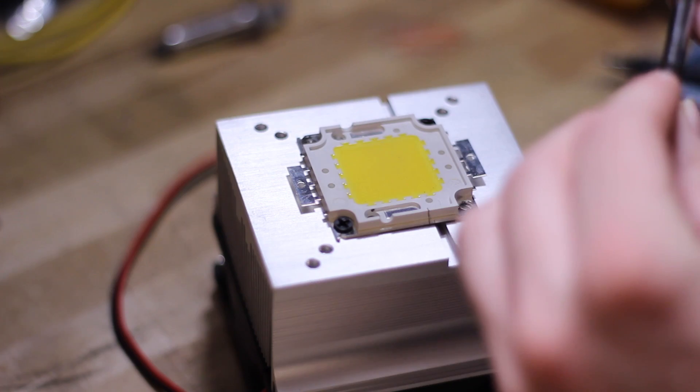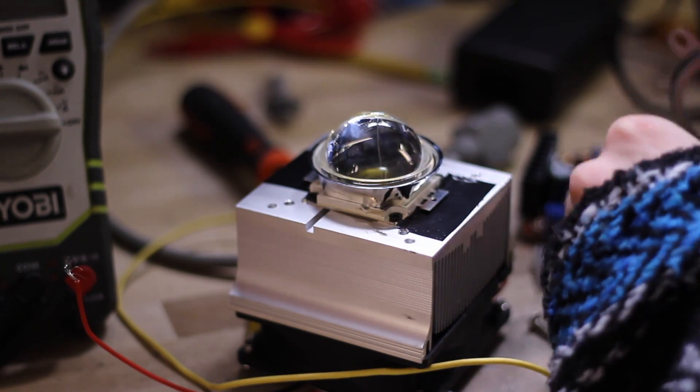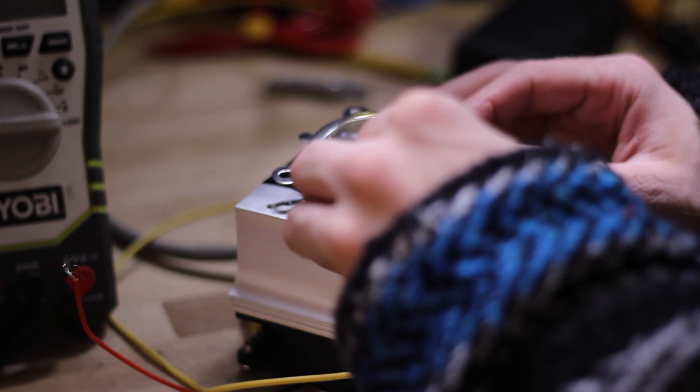After the LED is installed to the heat sink, I don't want to leave it exposed to the elements to get dirty or broken. So I'm going to install a reflector as well as a lens to go over it. This came with my heat sink but can also be purchased separately.